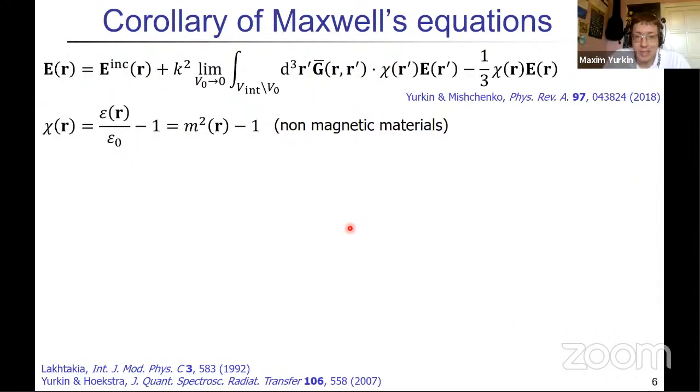The nice thing is that actually the same DDA, the same equations, can be derived very rigorously. So you just take a differential Maxwell equation, then an equivalent form of integral Maxwell equations, which is shown here for non-magnetic materials. There are some issues with singularity, et cetera, but it's all, for example, a recent paper where it's all discussed in details. And then you just take this equation, do volume discretization.